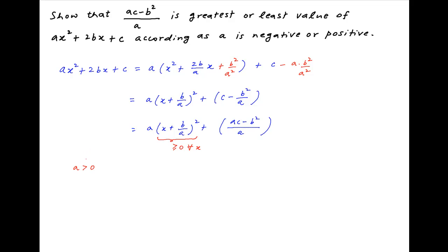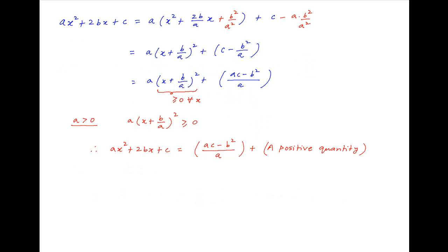Consider the case when a is greater than 0. Therefore the first term, which is a times x plus b upon a whole square, is greater than or equal to 0. Therefore, using the result above, ax squared plus 2bx plus c can be expressed as ac minus b squared upon a plus a positive quantity. It therefore follows that ac minus b squared upon a is always less than or equal to ax squared plus 2bx plus c.